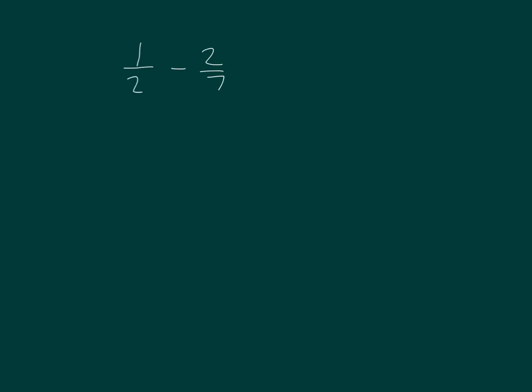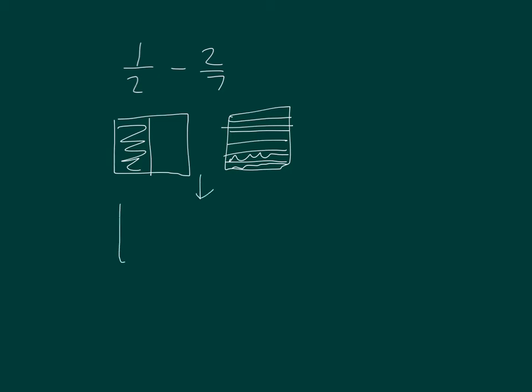1 half minus 2 sevenths. There's 1 half. There's 2 sevenths. And then we make equivalent fractions. That would be 7 fourteenths.